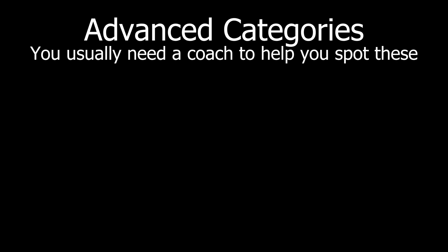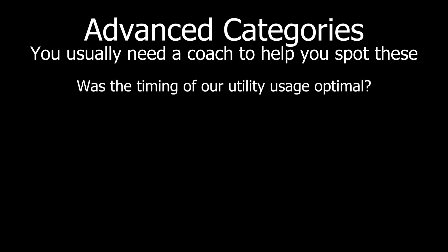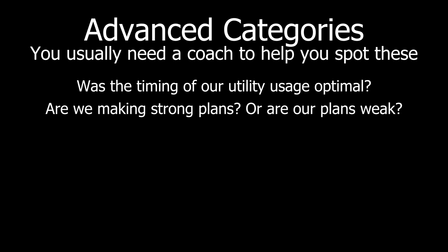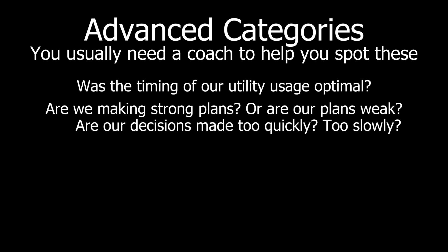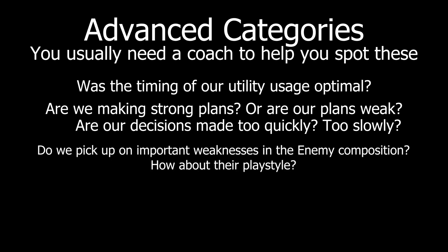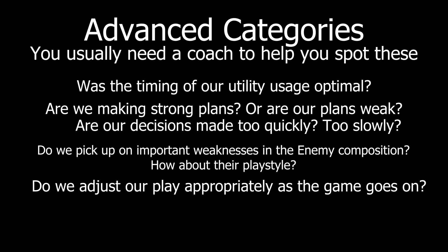Advanced categories involve less objective metrics of our game, and we enter the realm of subjectivity. This is where it's important that you can back up any claim you make here with evidence from high-tier gameplay. Was the timing of our utility usage optimal? Are we making strong plans, or are our plans weak? Are our decisions made too quickly or too slowly? Do we pick up on important weaknesses in the enemy composition? How about the enemy playstyle? Do we adjust our play appropriately as the game goes on to the habits of our enemies?